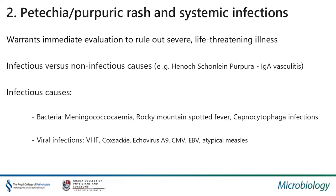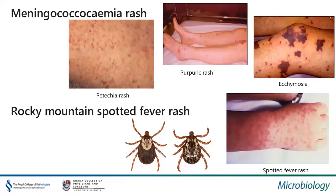Petechial and purpuric rash in systemic infection warrants immediate evaluation to rule out life-threatening illness. There are a number of infectious conditions — but also non-infectious conditions like thrombotic thrombocytopenic purpura, immune thrombocytopenic purpura, and IgA vasculitis. The most important infectious bacterial causes include meningococcemia, Rocky Mountain spotted fever, and Capnocytophaga canimorsus infections. Viral infections like viral hemorrhagic fever, Coxsackievirus, Echovirus, Cytomegalovirus, Dengue virus, and even atypical measles could also cause petechial and hemorrhagic rash. Such patients must be quickly investigated. The meningococcal rash here is caused by Neisseria meningitidis — this infection is sporadic worldwide but very common in the sub-Saharan meningitis belt where it causes seasonal epidemics.